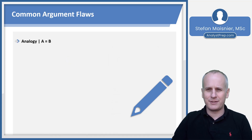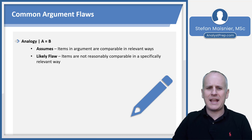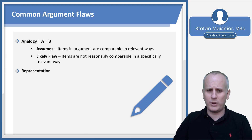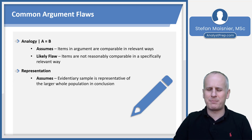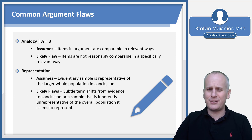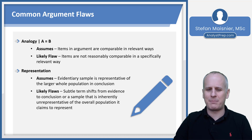Our common argument flaws: the analogy says A is equal to B, assuming the items are comparable in relevant ways. A likely flaw is stating that the items are not reasonably comparable in some specifically relevant way. Representation arguments assume the sample is representative of the larger whole population. Likely flaws involve subtle term shifts from evidence to conclusion suggesting these two things aren't exactly alike, or some reason the sample is inherently unrepresentative of the overall population it claims to represent.